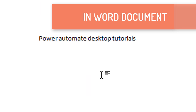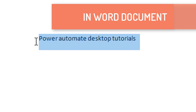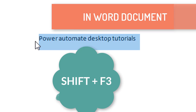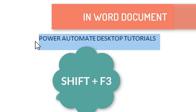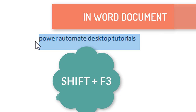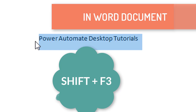On my screen I have a text that reads 'Power Automate Desktop Tutorials'. If I want to change the case of this text, I can use the shortcut Shift+F3. It will convert the text into uppercase, and pressing it again converts to lowercase, and then to title case as well.